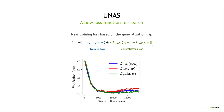We also introduce a new search loss function that helps us avoid discovering architectures that are prone to overfitting. Our loss function consists of two terms including the training loss and a term that measures the generalization gap of the network between training and validation sets.